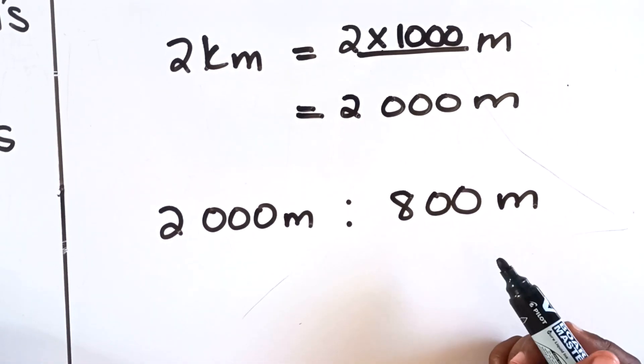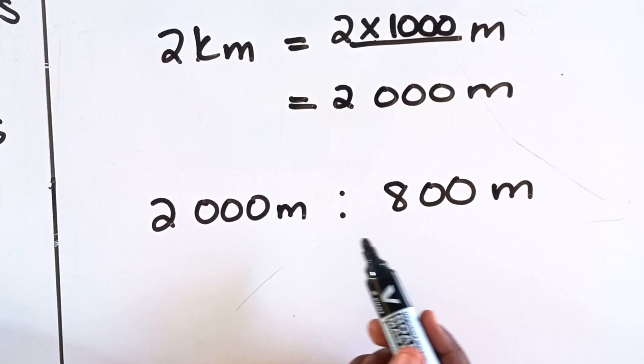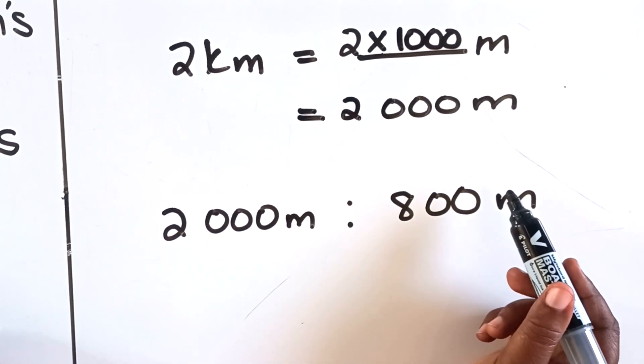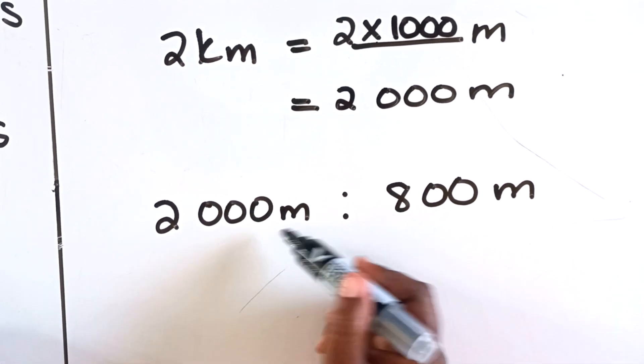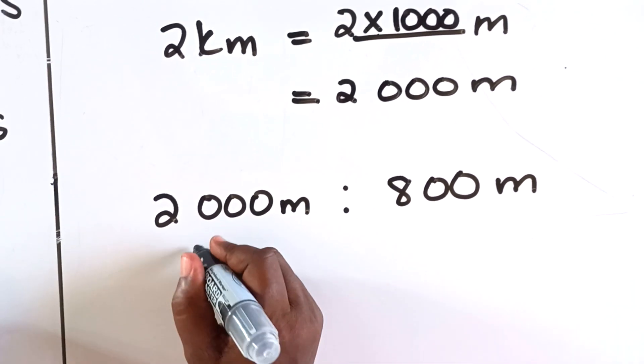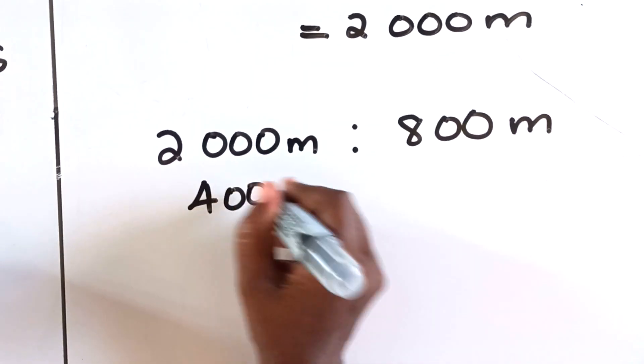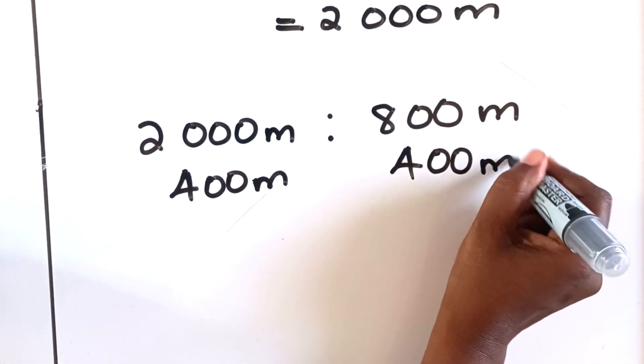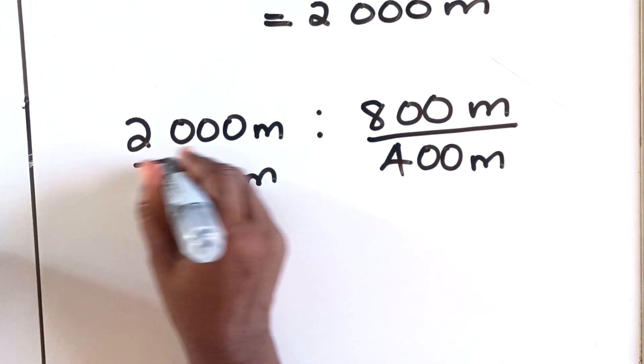Now we must find the highest common factor. You must find a number that will divide fully into this one and divide fully into that one, and also you need to divide the units as well. That's why you need to have the same units. So that number is 400. 400 meters divides both, so we're going to divide both of them by 400.